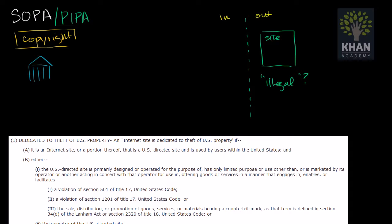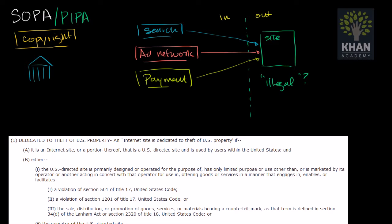So things that are doing that might include search engines like Google or Bing. They obviously link to this site over here. You might have ad networks, sites that allow this site over here to display ads and get revenue from them. You might have payment sites like PayPal or credit card processors that this site uses to collect revenue. And maybe most importantly,